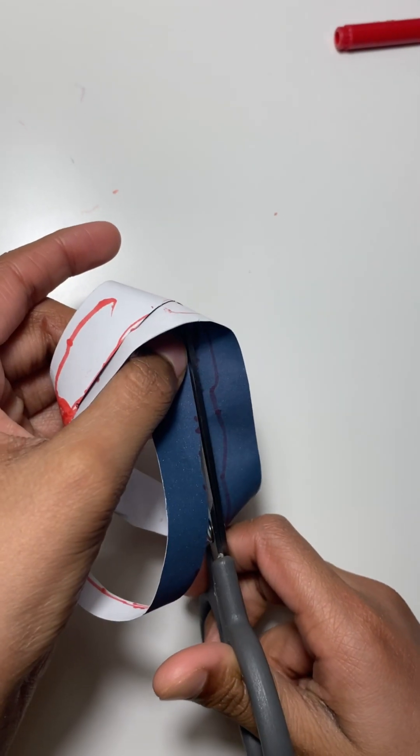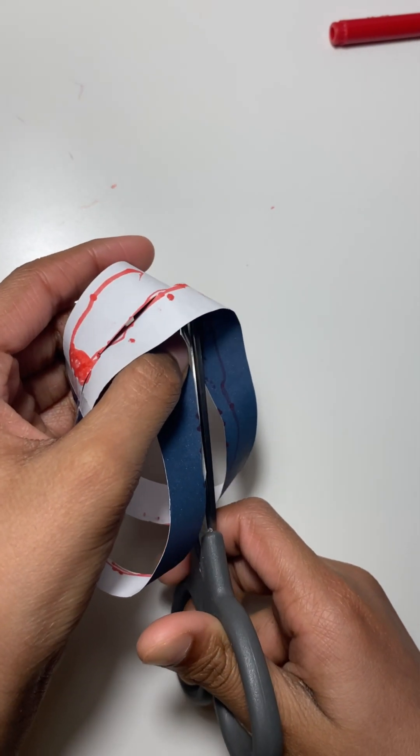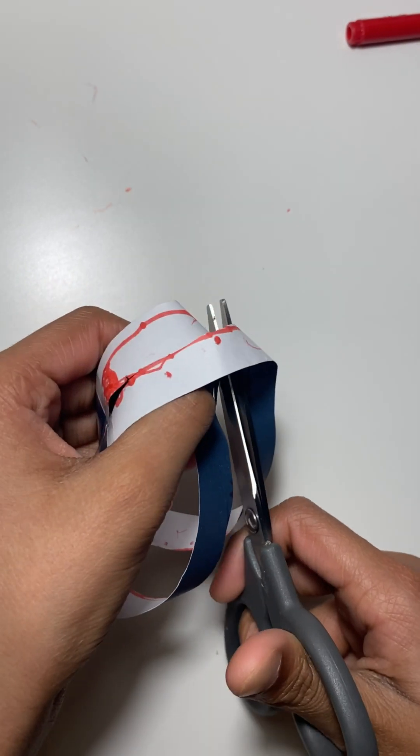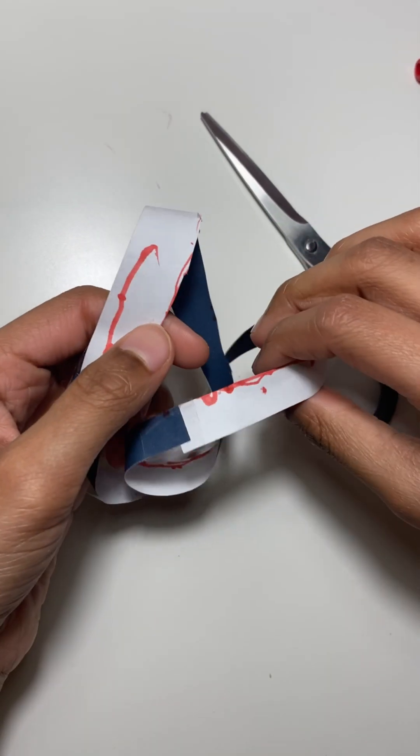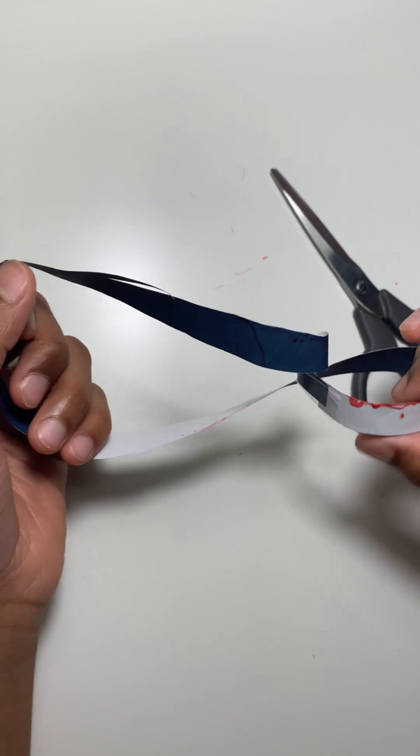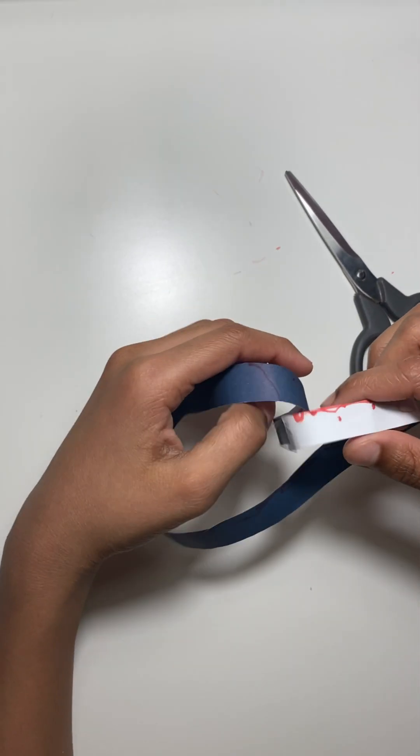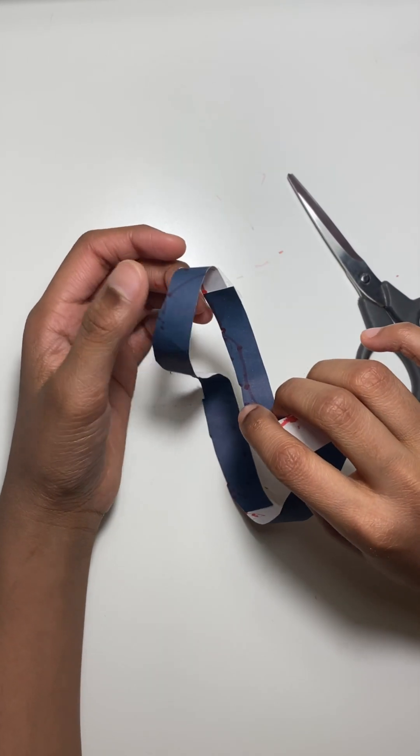Initially, it might seem like you would get two separate strips. As you continue to cut along the strip, you'll notice that instead of getting two distinct pieces, you end up with a single, longer strip with twice the length.